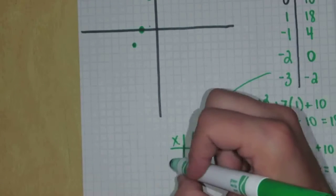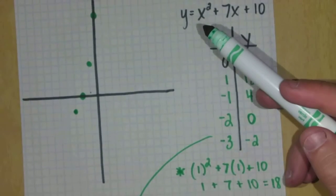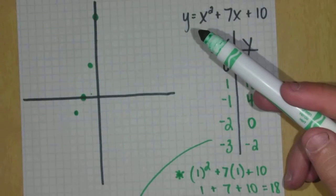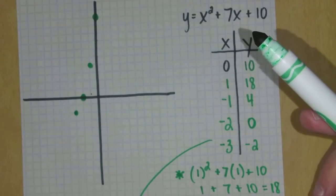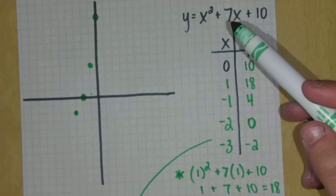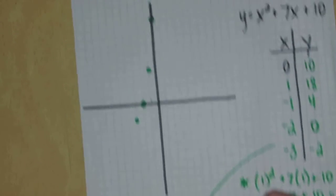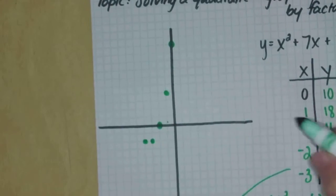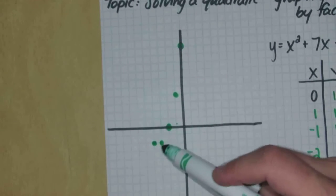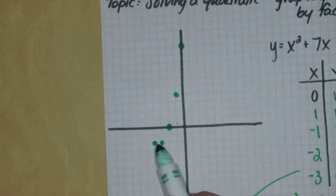Let's try negative four. Negative four squared is sixteen; sixteen plus ten is twenty-six. Seven times negative four is negative twenty-eight. Negative twenty-eight plus twenty-six gives me negative two again. So I have the point (-4, -2) — I have indeed started to come back up. That means my vertex is somewhere between negative three and negative four, and I can make a rough estimate that it's going to be lower than those two points.